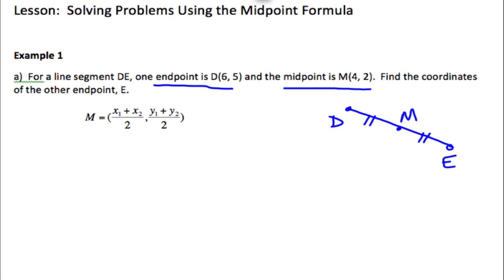So what they did, they gave us 6, 5 and they gave us the midpoint is 4, 2. But what they didn't give us is the other endpoint. We don't know what the other endpoint is.